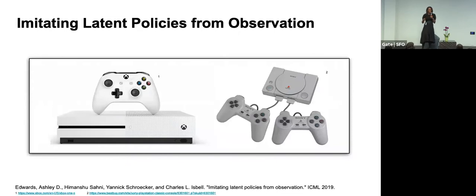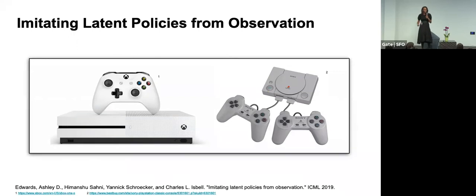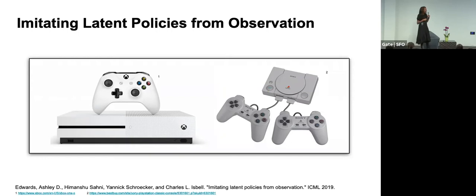When we're solving tasks, if we watch somebody do something, we don't usually need to learn how to do it completely from scratch. If we watch a friend play a video game, we might not know the controls but we can figure out how to play — jump over that, go in that door, avoid that monster. Once we pick up the controller, we figure out how to map what we've learned to the actual controls. This next work, 'Imitating Latent Policies from Observation,' published at ICML, does exactly that.